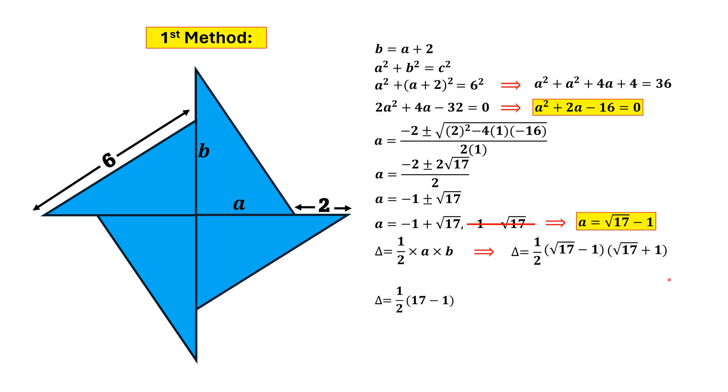we will find area of this right triangle as half times (17 - 1), that is half times 16. And thus, area of one right triangle is 8 square units. Now we move towards the second method.